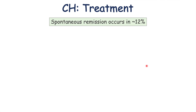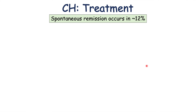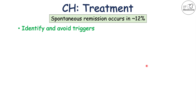Spontaneous remission of cluster headaches occurs in roughly 12% of patients. It is important to identify and avoid triggers, including alcohol consumption and tobacco use.